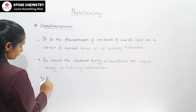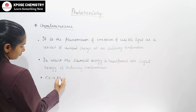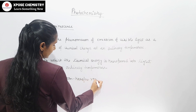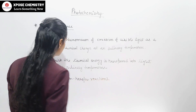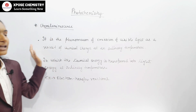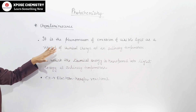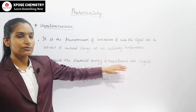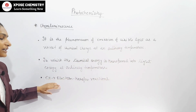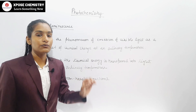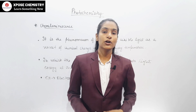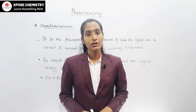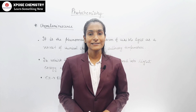Examples of chemiluminescence include electron transfer reactions. Today we have covered what is luminescence and its three types: fluorescence, phosphorescence, and chemiluminescence. Keep learning and exploring.